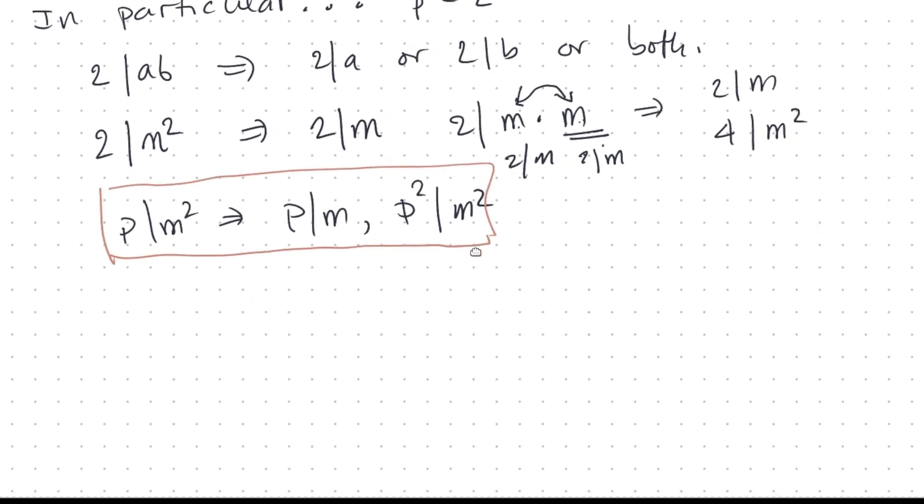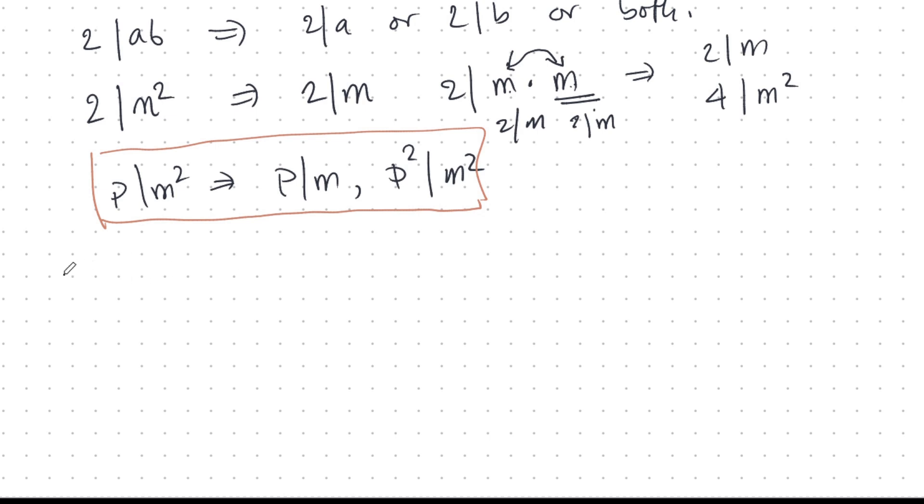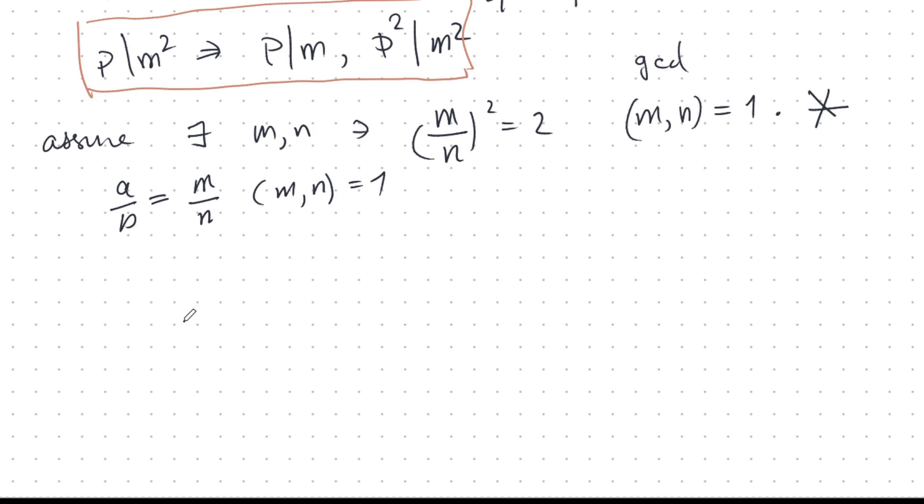Now the classic proof goes by contradiction. Let's assume this is possible. There exists M and N such that M over N squared is 2. M over N is a rational number and the square is 2. And furthermore, we assume the GCD of M, N is equal to 1. This is always possible because if I have two numbers A over B and they're not reduced, then I can write them in a reduced form M over N where the GCD is 1, they are coprime. We're going to use this fact, put a star here because this is going to be where the contradiction happens.